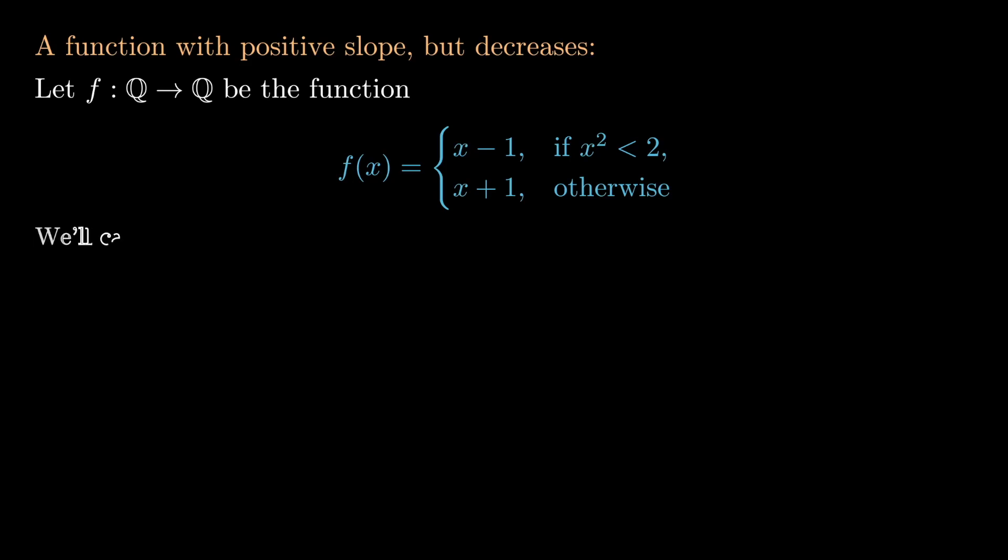We'll calculate the derivative. So let's first do it for x squared less than 2, in which case f of x plus h is just going to be x plus h minus 1. Because I can always take h to be sufficiently small, since I'm going to take it to be 0, and I can ensure that if x squared is less than 2, then I can get x plus h squared to be less than 2.